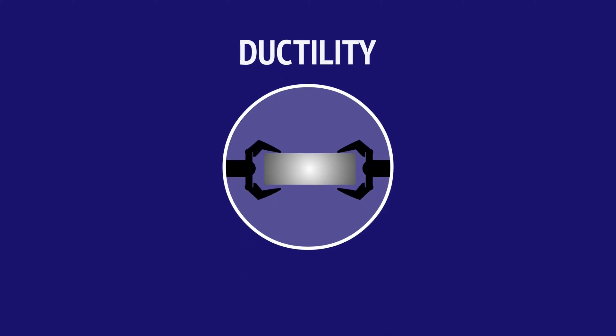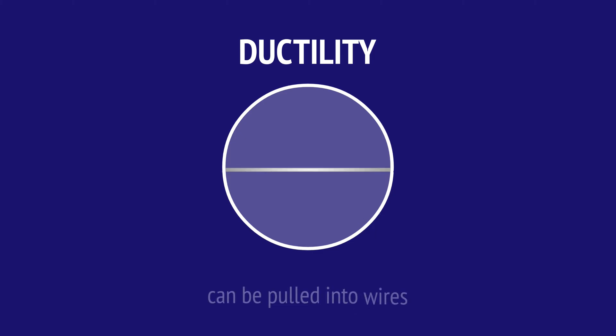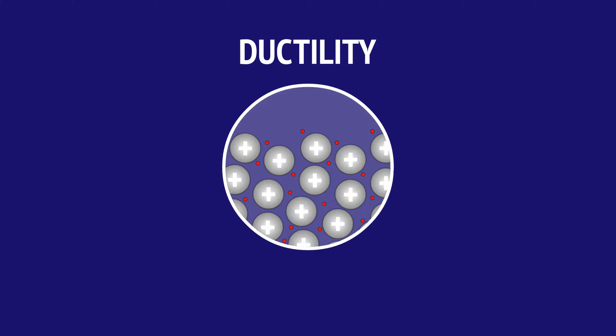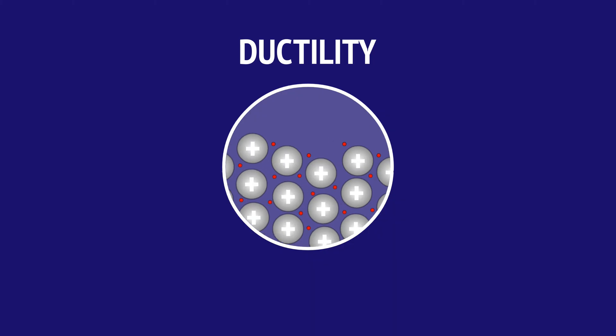Metals are also ductile, which means they can be stretched and pulled into wires. Again, that's because the atoms can slide past each other without breaking the metallic bonds.